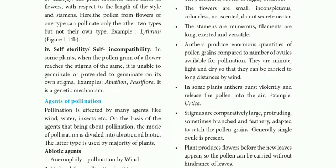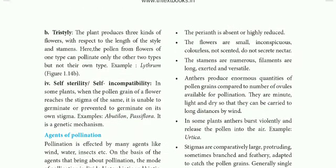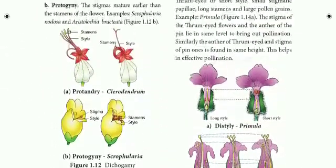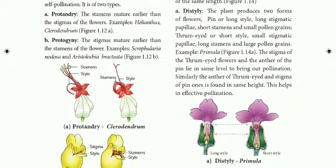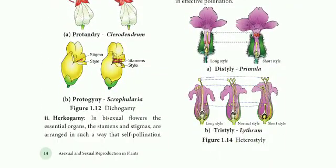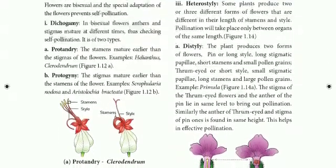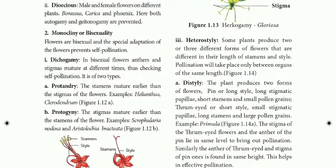These are the contrivances of cross-pollination. Hercogamy involves the reflex of style away from the stamen so that the stigma and stamen cannot self-pollinate. In Heterostyly — Distyle — there is a long stigma and a short stigma in thrum-eyed flowers arranged to facilitate cross-pollination.